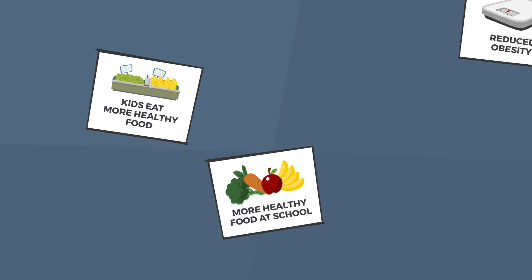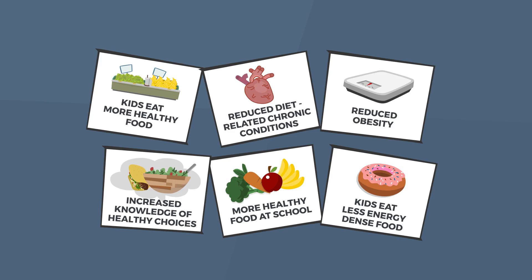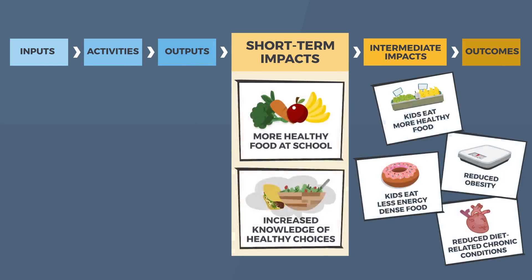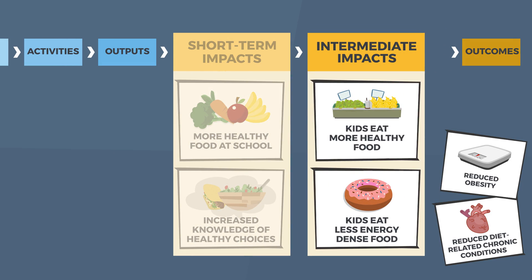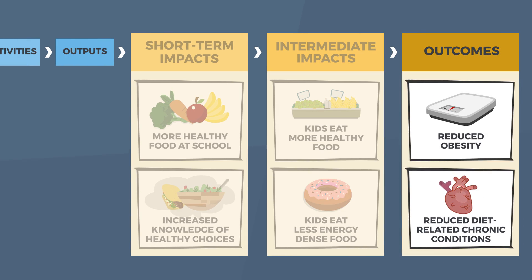One way to start is to list possible impacts and outcomes — these are what you think the program will achieve. Then sequence the achievements from short-term impacts to intermediate impacts and long-term outcomes.